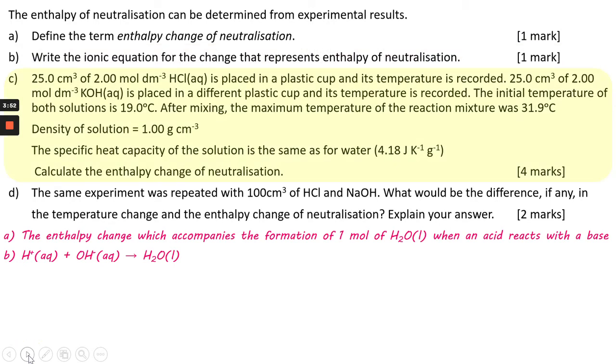The third part of the question is more involved. You've got two samples of liquid. One is an acid of two mole per decimeter cubed, 25 cm3 of it. The other is the same volume, but this time the same concentration, but it's a base, an alkali. So they're placed in different plastic cups and their temperatures are recorded.